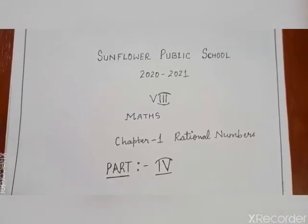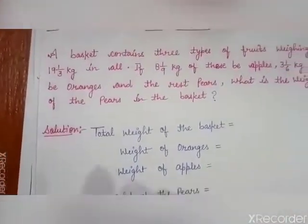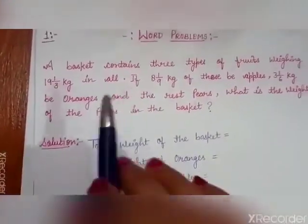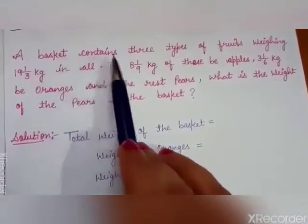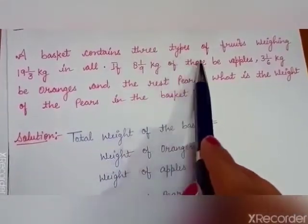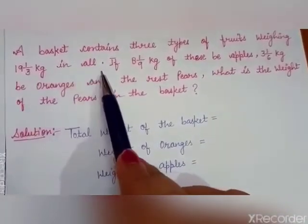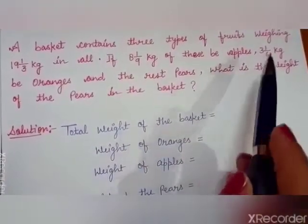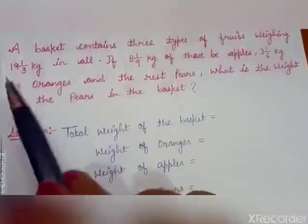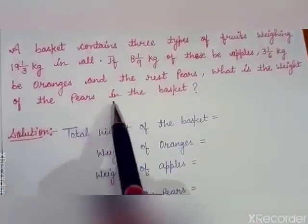Here is your first problem. A basket contains three types of fruits weighing 19 whole 1 by 3 kg in all. If 8 whole 1 by 9 kg of these be apples, 3 whole 1 by 6 kg be oranges, and the rest pears, what is the weight of the pears in the basket?